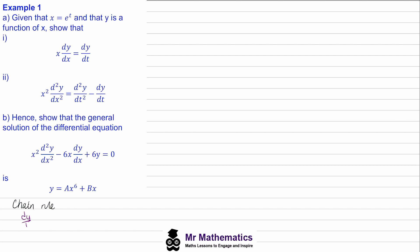So dy/dt will be equal to dy/dx multiplied by dx/dt, because then the two dx's will cancel and we've got dy/dt. We can work out dx/dt because we know that x is equal to e to the t, so we differentiate: dx/dt equals e to the t, which is equal to x. So dy/dt will equal x multiplied by dy/dx, and this is what we were asked to show in part one.